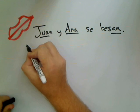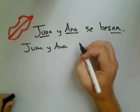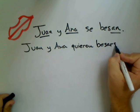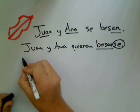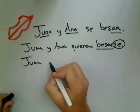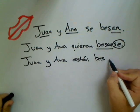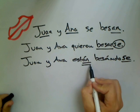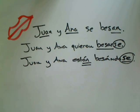We could also say JUAN Y ANA QUIEREN BESARSE — even when the main verb isn't conjugated, we still need SE to express reciprocity. Or in the present progressive: JUAN Y ANA ESTÁN BESÁNDOSE — the plural verb form, the dual combined subject, and SE indicating reciprocity of the action.